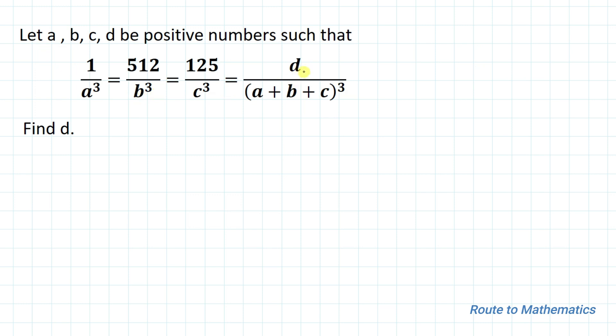We are asked to find the value of the unknown variable d. So without any delay, let's start the solution. We have one equation: 1/a³ = 512/b³ = 125/c³.